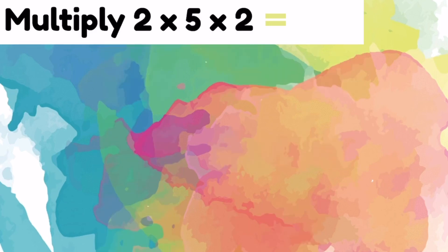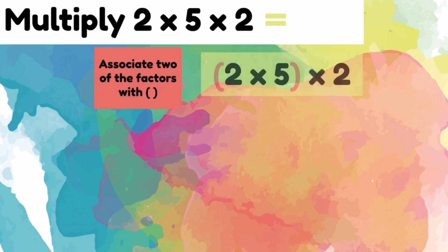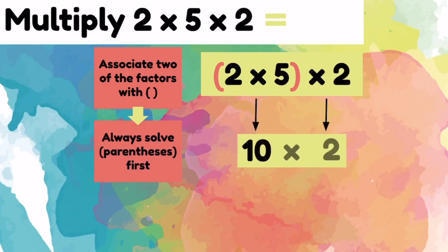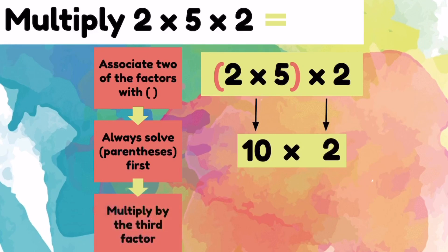Let's multiply 2 times 5 times 2. Let's associate the 2 and the 5 by grouping them with parentheses. Always solve parentheses first. 2 times 5 equals 10. Let's bring down the times 2. Let's multiply by our third factor, which was the 2.